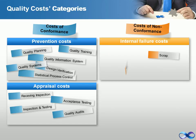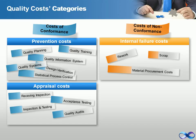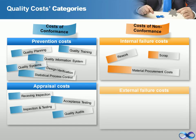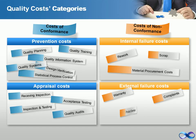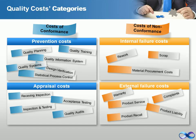Costs of non-conformance includes two subcategories: internal failure costs and external failure costs. Internal failure costs arise from defects caught internally and dealt with by discarding or repairing the defective items. Examples include scrap, rework, and material procurement costs.